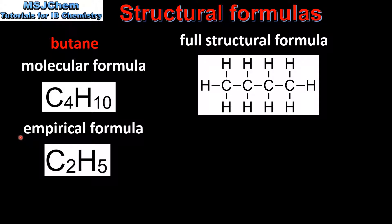Next we have the empirical formula. The empirical formula for butane is C2H5. This tells you the lowest whole number ratio of atoms in a compound.